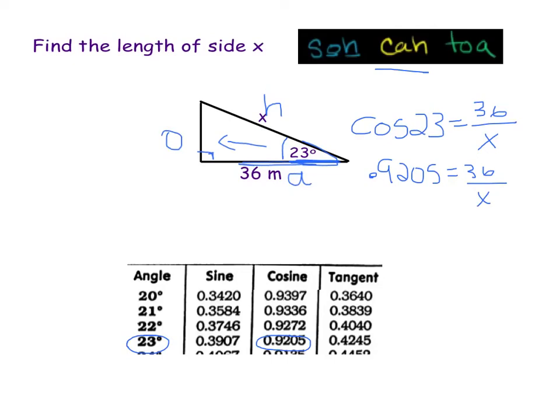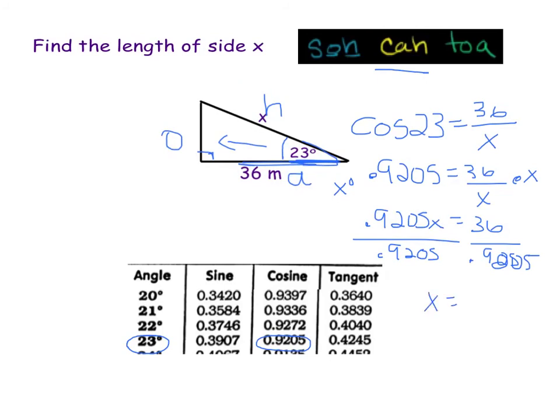Now here be careful. It's not X over 36. We can't multiply both by 36. We actually have to multiply both by X. So now I have 0.9205X equals 36, and to solve, you have to divide by 0.9205. So I ended up with X is approximately 39.1. So I'm going to come back up here. Does that make sense? Here's the 36. We knew that the hypotenuse had to be longer than that. So my answer is 39.1 meters. And again, that's an approximate.